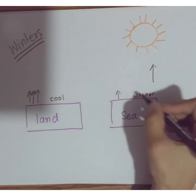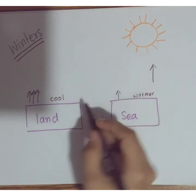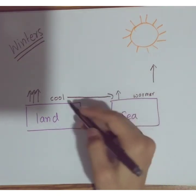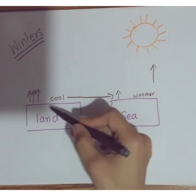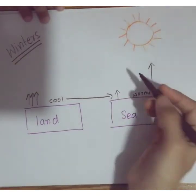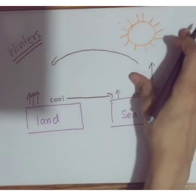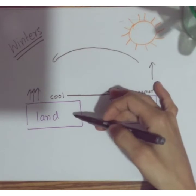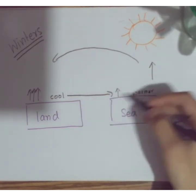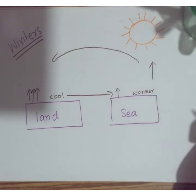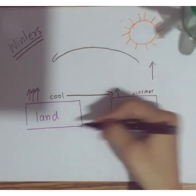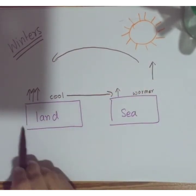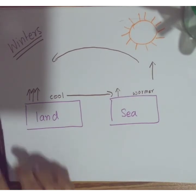The denser, cooler air over the land sticks to the surface and moves in to replace the warmer air that rose over the sea. This rotating circulation happens during winters — the cooler air from the land moves towards the sea, and the warmer air rotates back. This balances the temperature again, so coastal regions don't have very cold climates in winter. The warmer air from the sea moves towards the land, preventing it from becoming very cold.